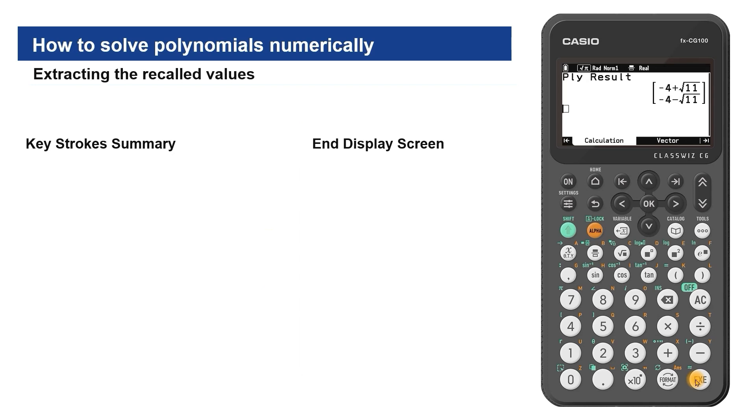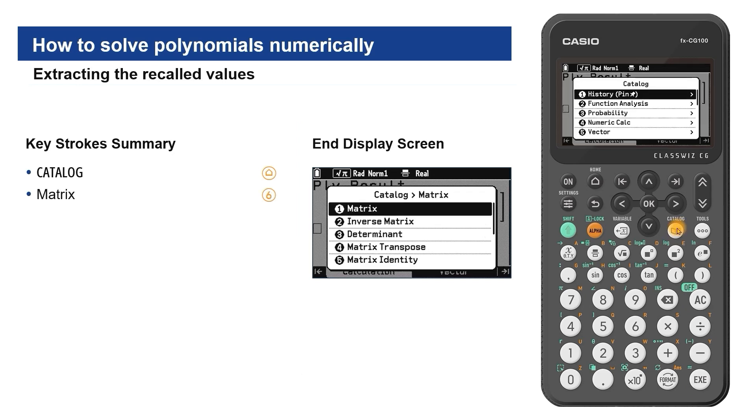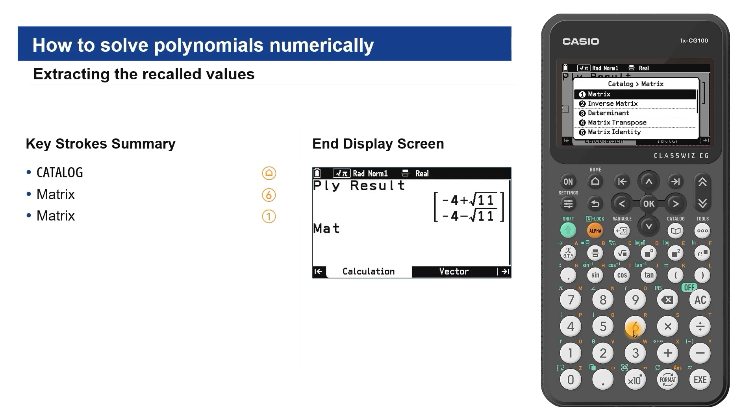We can now extract these matrix values to use in calculations. Press catalogue again. Scroll or use the shortcut to select matrix. From the matrix sub-menu, select matrix.